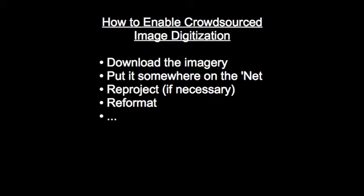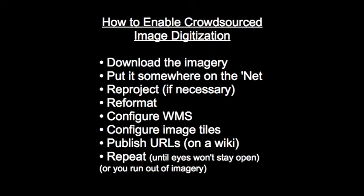So how do you do this? On the technical side, basically you get the imagery from wherever you get it from. We had imagery from DigitalGlobe and from GeoEye and from a variety of other sources, which is really great. But we decided to set up tile servers. We had to reproject it and then reformat it so that it was in an efficient form for delivery and then configure web mapping services and then configure tiling services on top of that and then publish those URLs on a wiki, which seems kind of silly, but that's where we had to put them. And then you repeat this process until basically you can't keep your eyes open anymore because you've been working on it for 36 hours straight.